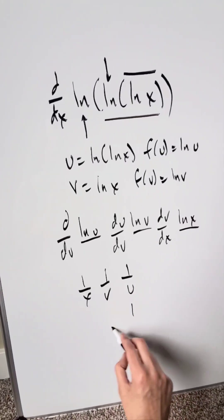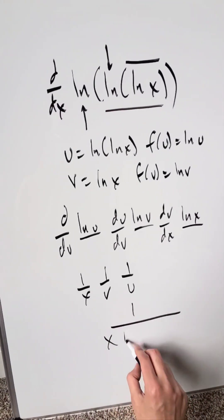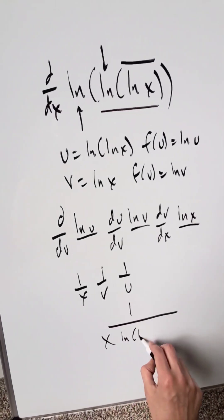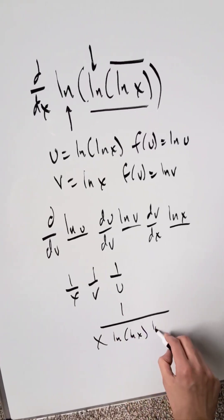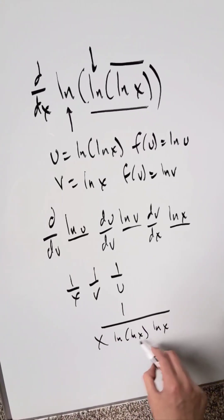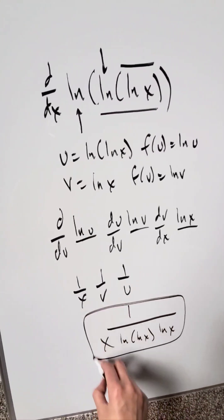Bringing everything together, your end result is 1 over x. The u substitution was ln(ln(x)), and the v substitution was natural log of x. This right here represents your derivative.